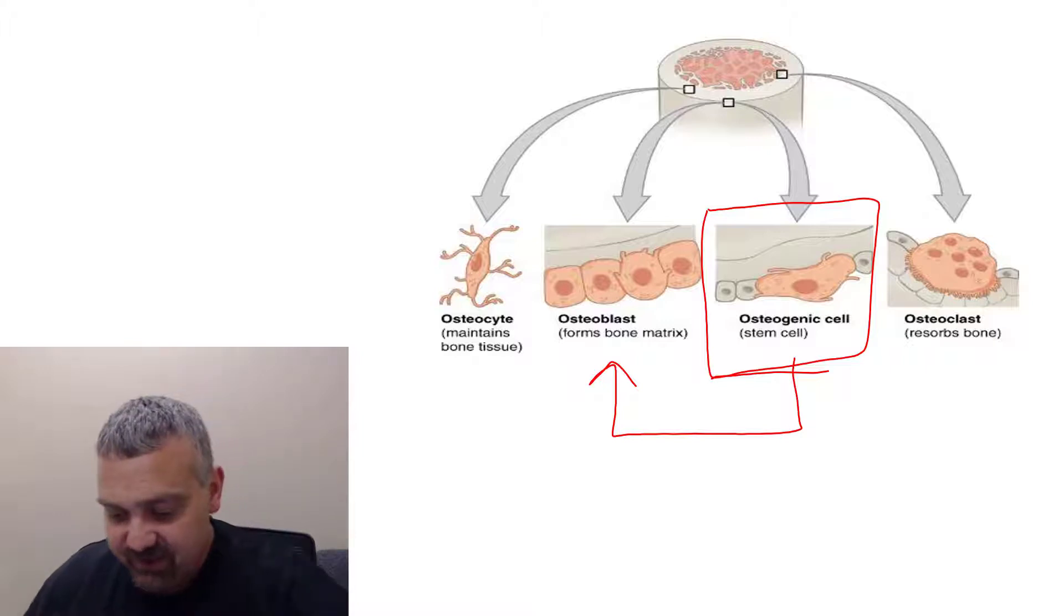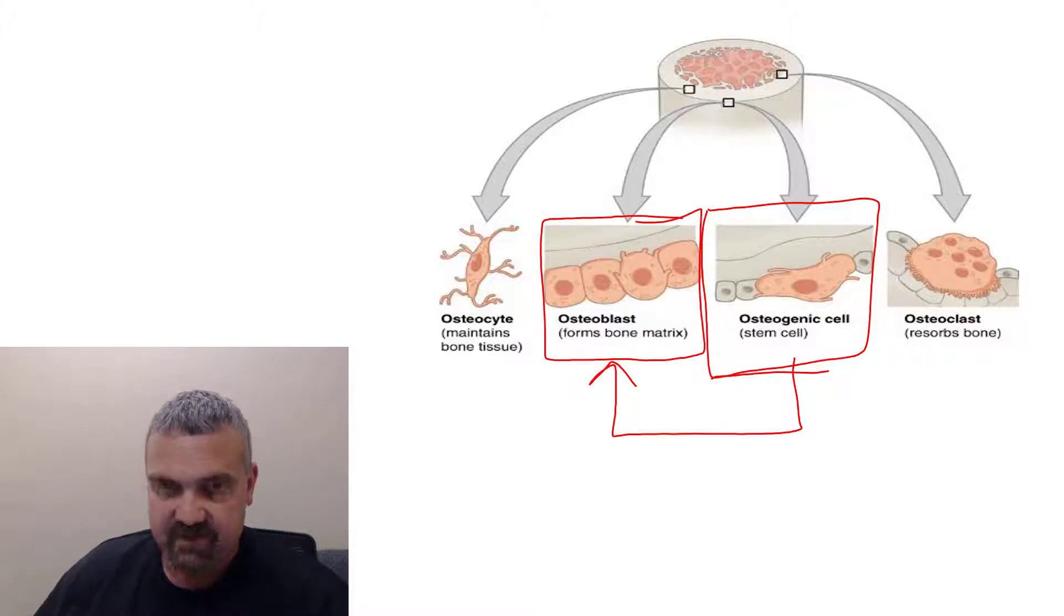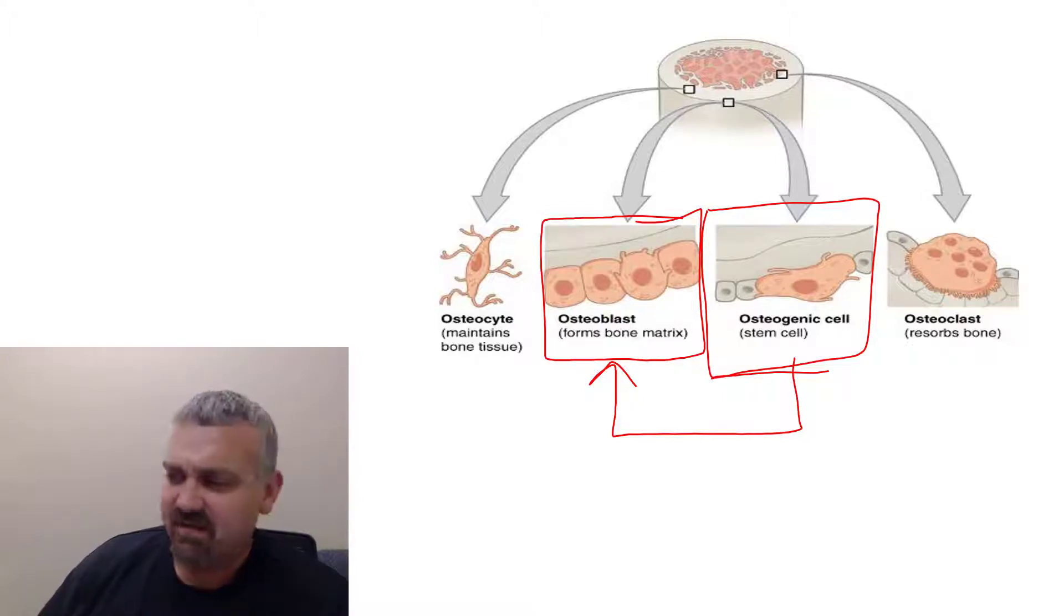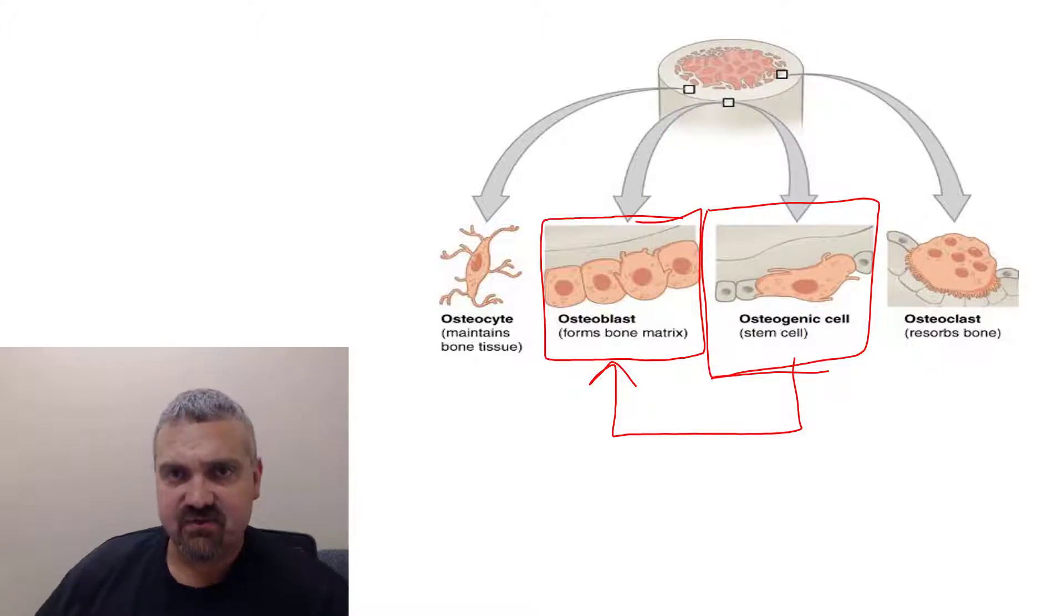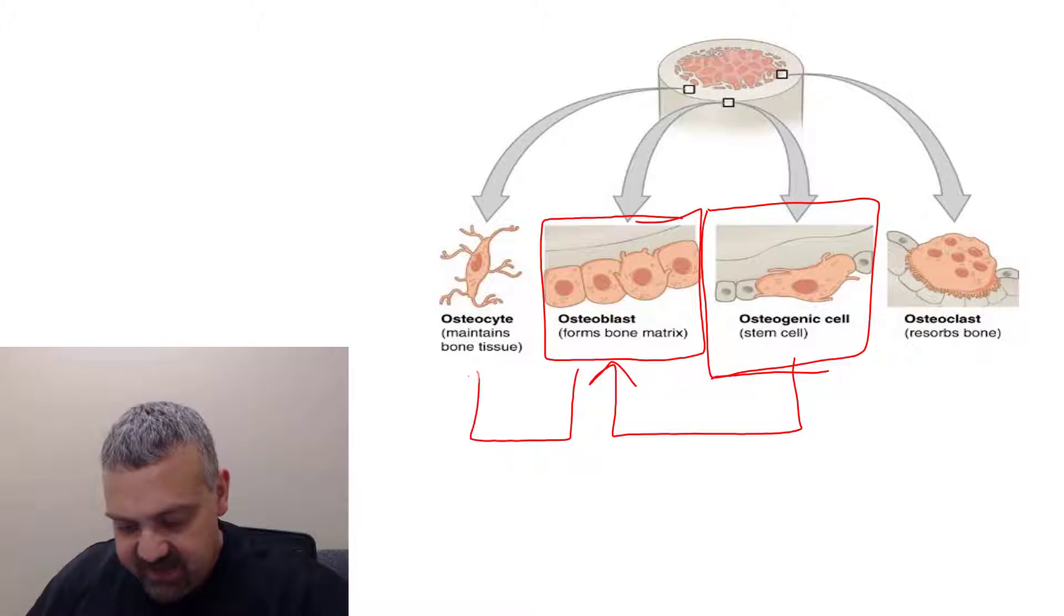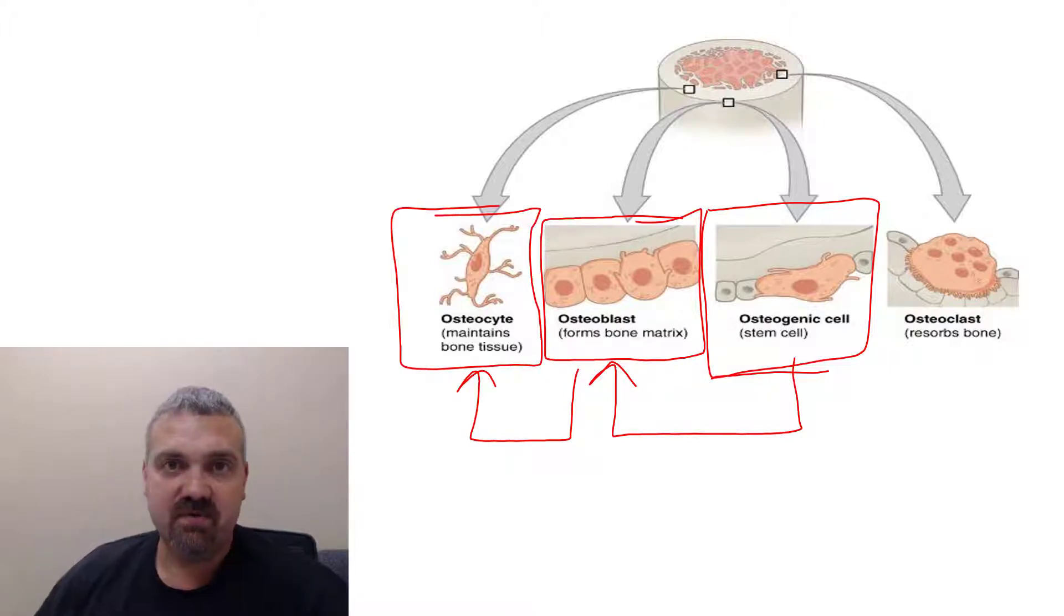What they actually do is as they build bone around themselves, they end up trapping themselves kind of like if you paint yourself into a corner. And what happens is once an osteoblast has trapped itself and surrounded itself with bone, then it becomes the osteocyte. An osteocyte is considered a mature bone cell.